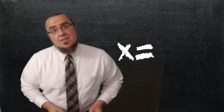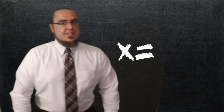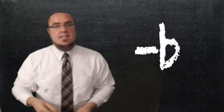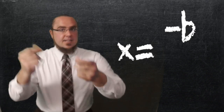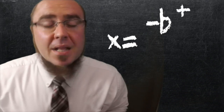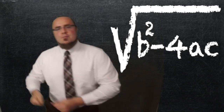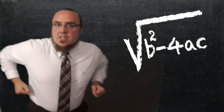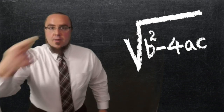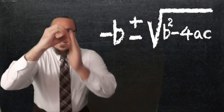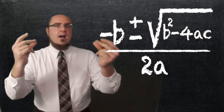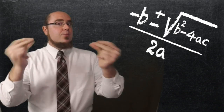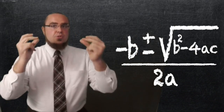x equals negative b, plus or minus the square root of b squared minus 4ac, over 2a.